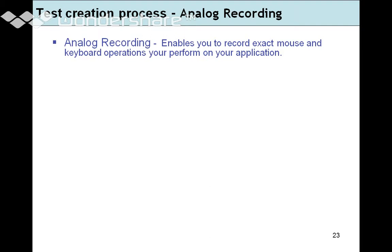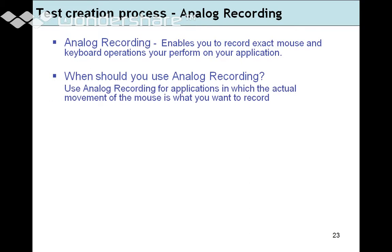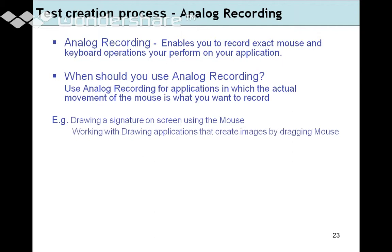You would use analog recording mode for applications where the actual movement of the mouse is what you want to record — for example, drawing a signature. In a bank, when you verify a signature on a check against the one stored in the system, automating that requires capturing mouse movement. Similarly, working with a drawing application that creates an image by dragging the mouse requires analog recording.